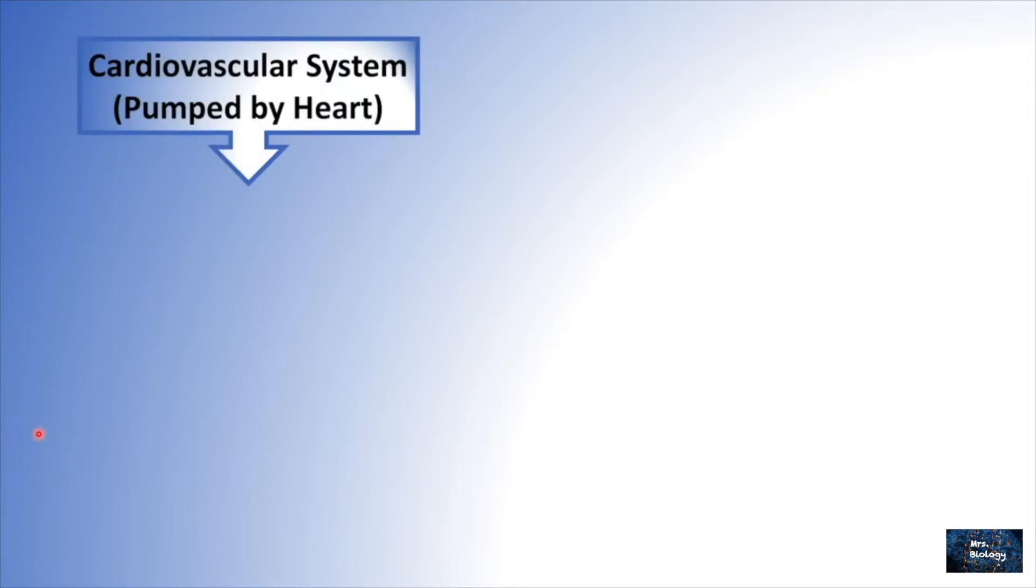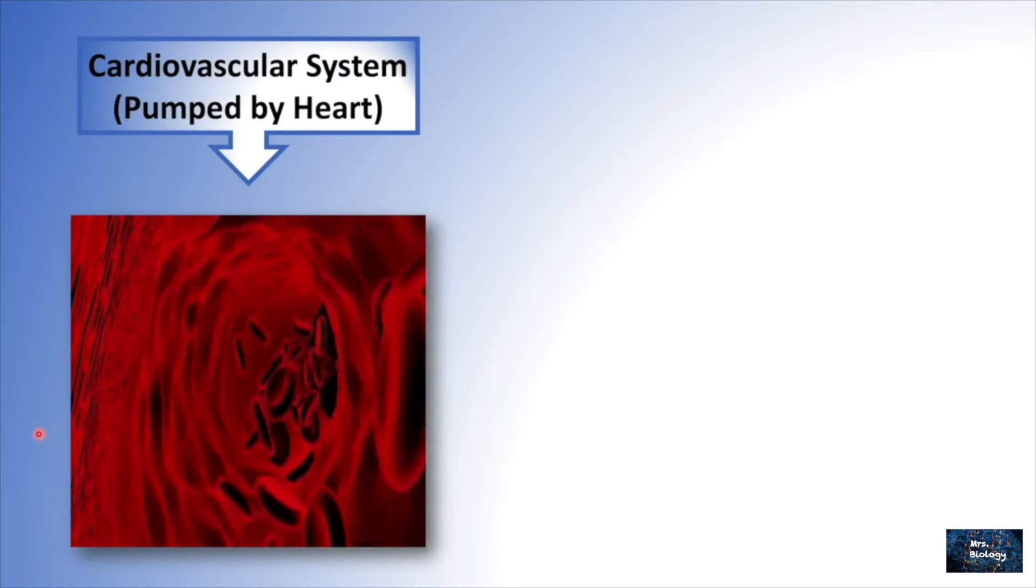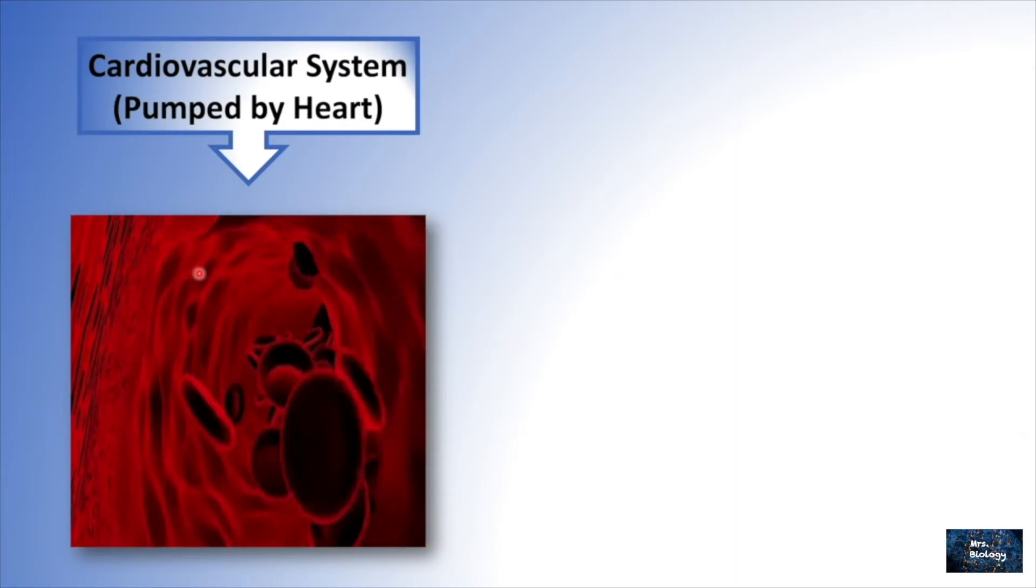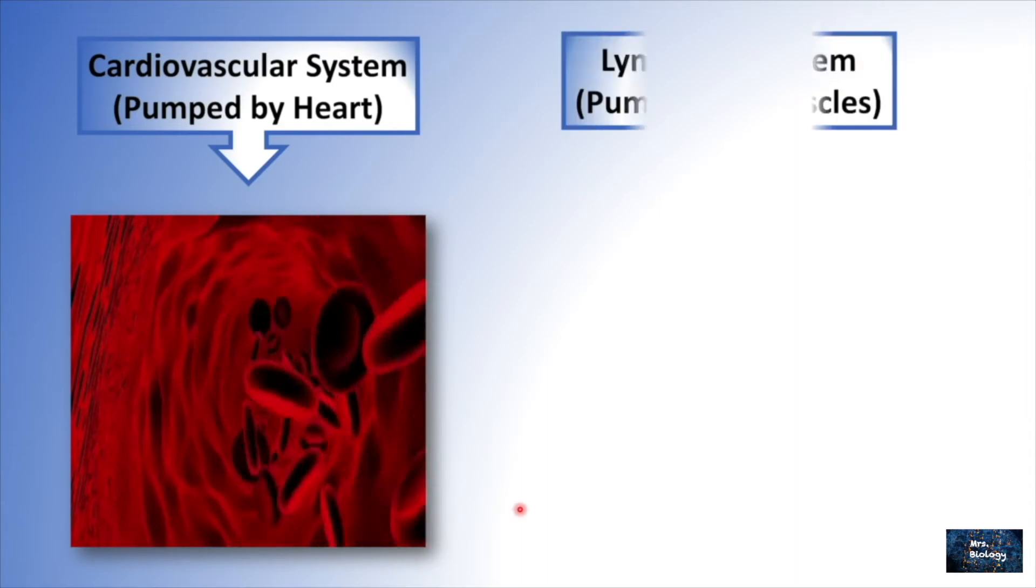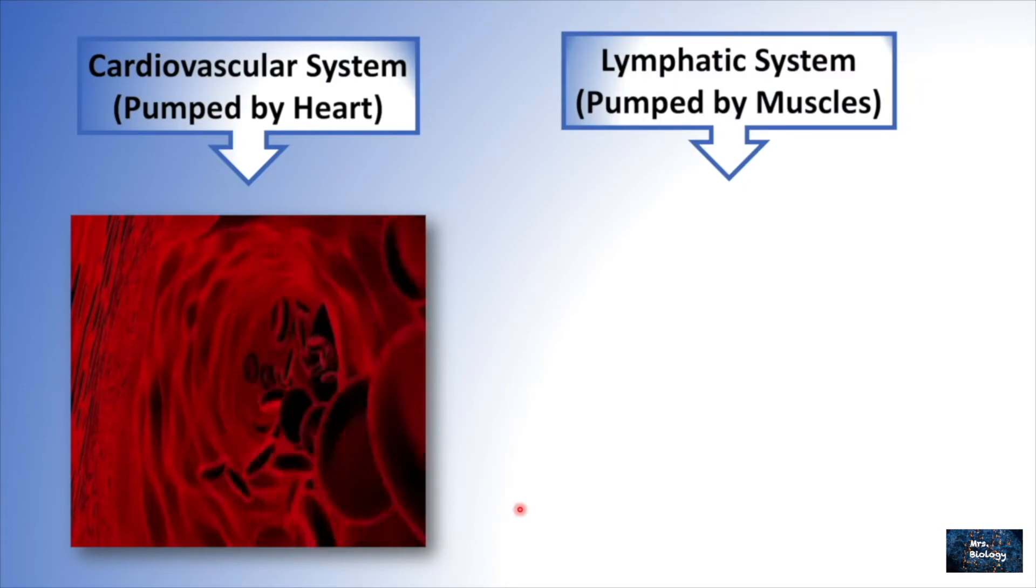Another cardiovascular system characteristic is that this system has a heart that pumps blood through a continuous circulation pattern. As such, the blood tends to be pumped at a higher pressure, especially in arteries.